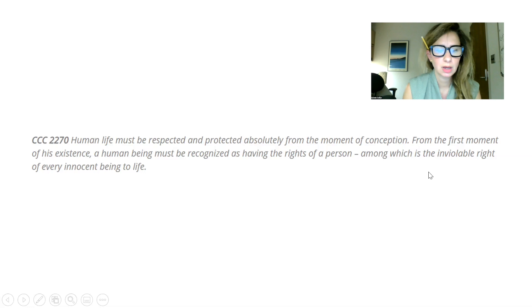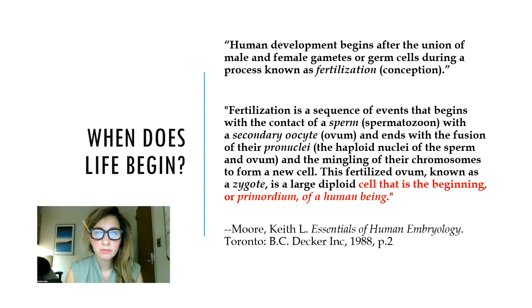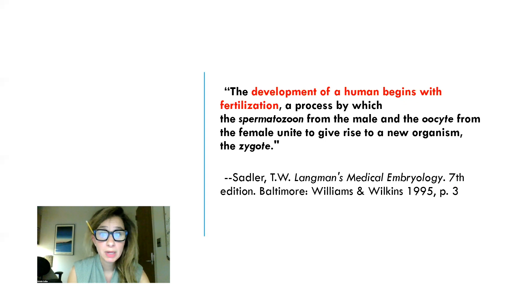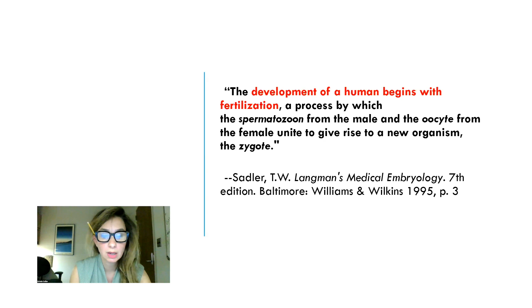What do classic embryology textbooks say? Human development begins after the union of male and female gametes during the process known as fertilization or conception. This fertilized ovum, known as a zygote, is a large diploid cell that is the beginning or primordium of a human being. The development of a human being begins with fertilization. If even the science textbooks state this, then abortion clearly puts an end to the life of a human being — not just some cells, but a human being, a member of Homo sapiens, a member of the human family.